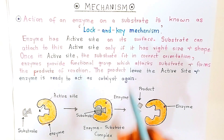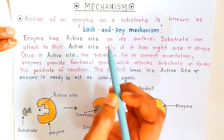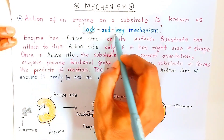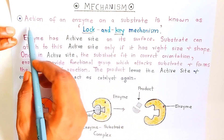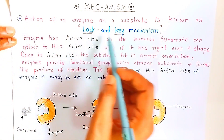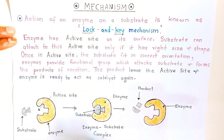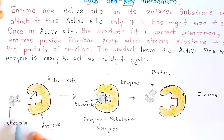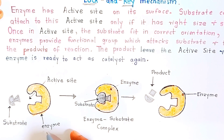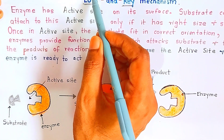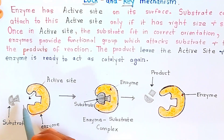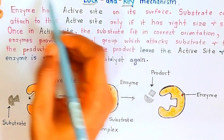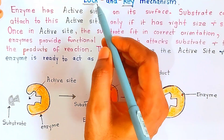Now we are going to see the mechanism. The first and most famous mechanism in enzyme science is called the lock and key mechanism. The action of enzyme on a substrate is known as the lock and key mechanism. Here I have taken two reactants: one is the enzyme and the other is the substrate. The way the enzyme reacts with the substrate is called the lock and key mechanism.